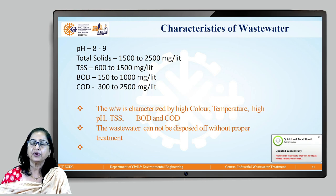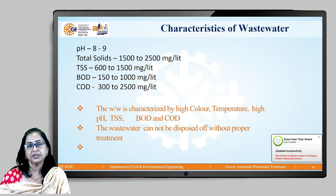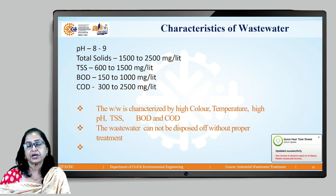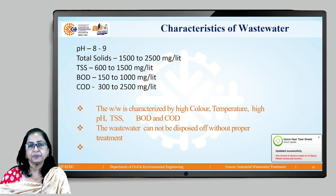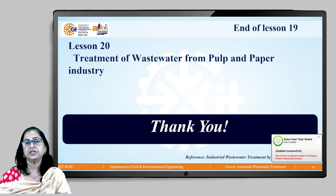The characteristics of the wastewater: pH is on the higher side, in the range of 8 to 9, due to alkaline agents used in manufacturing. Total solids are 1500 to 2000 mg/L, with suspended solids in the range of 600 to 1500 mg/L. BOD ranges from 150 to 1000 mg/L, which is quite high, and COD is in the range of 300 to 2000 mg/L. The wastewater is highly colored, has high temperature, high pH, high suspended solids, and high BOD and COD values, and cannot be disposed of without proper treatment.